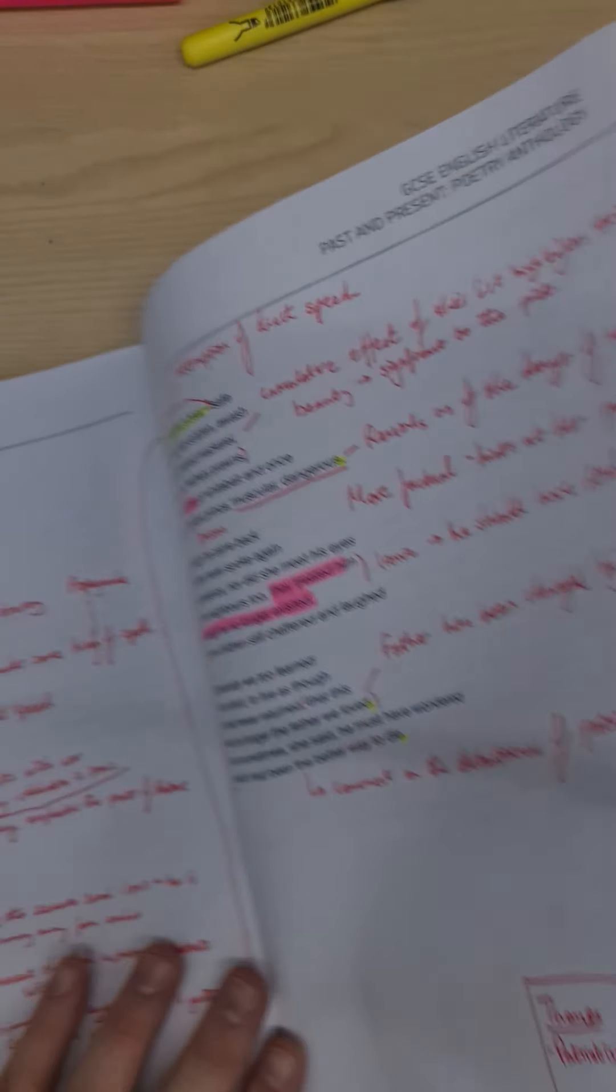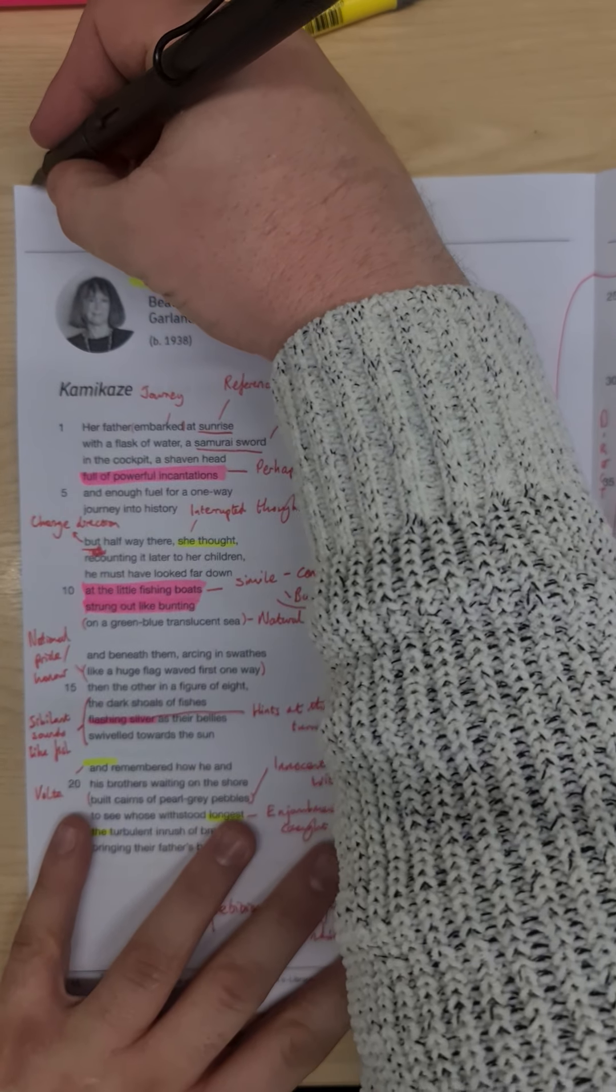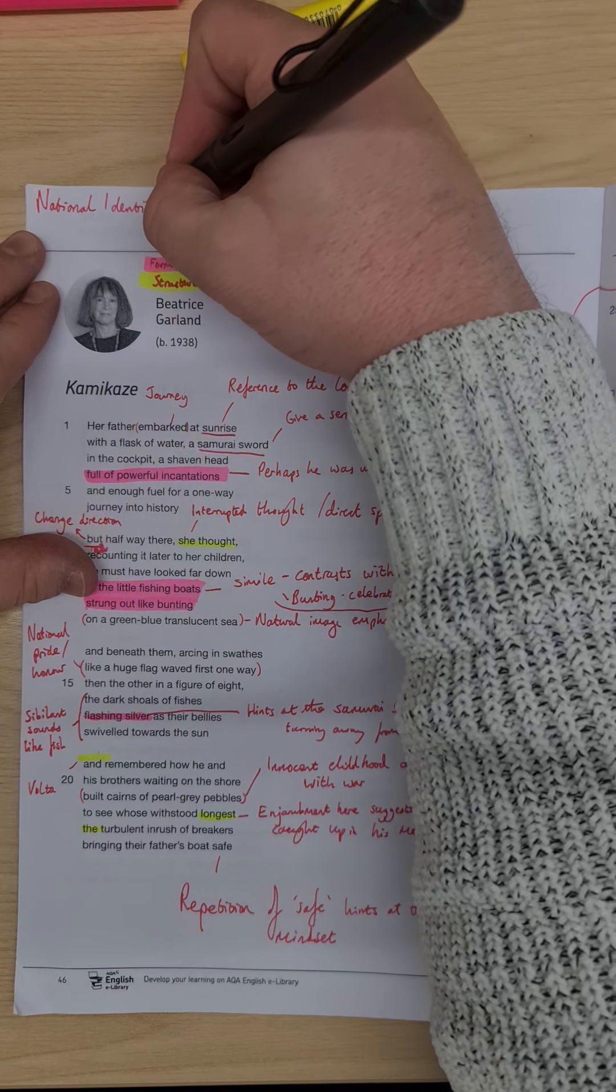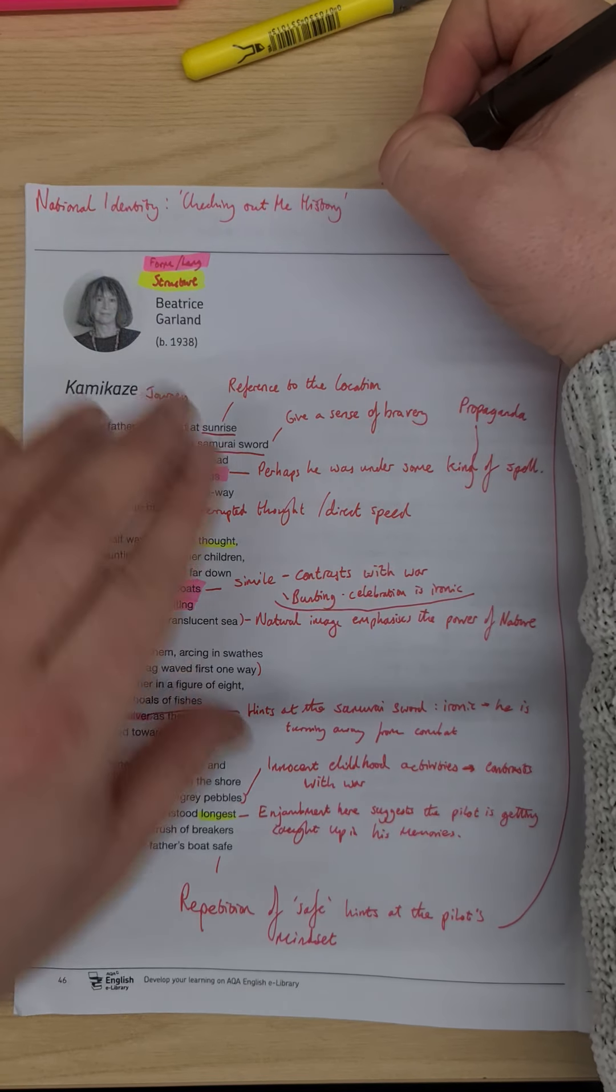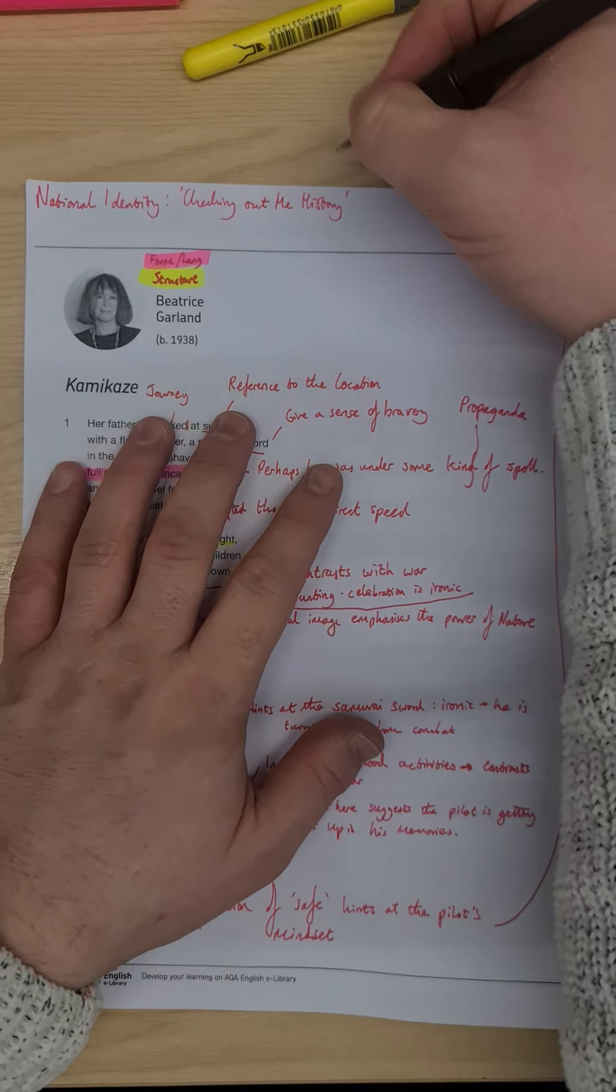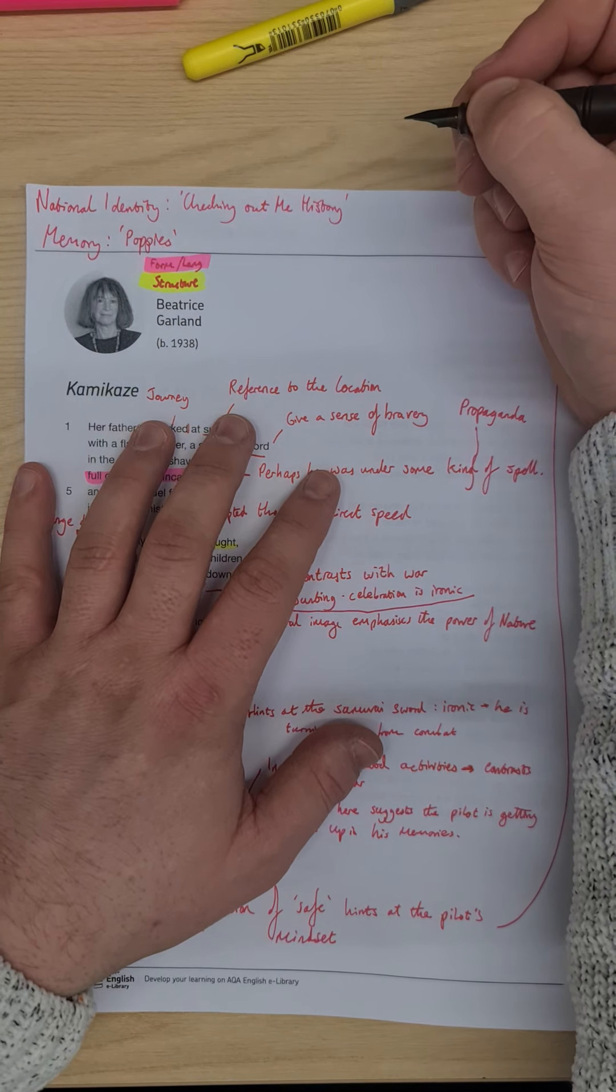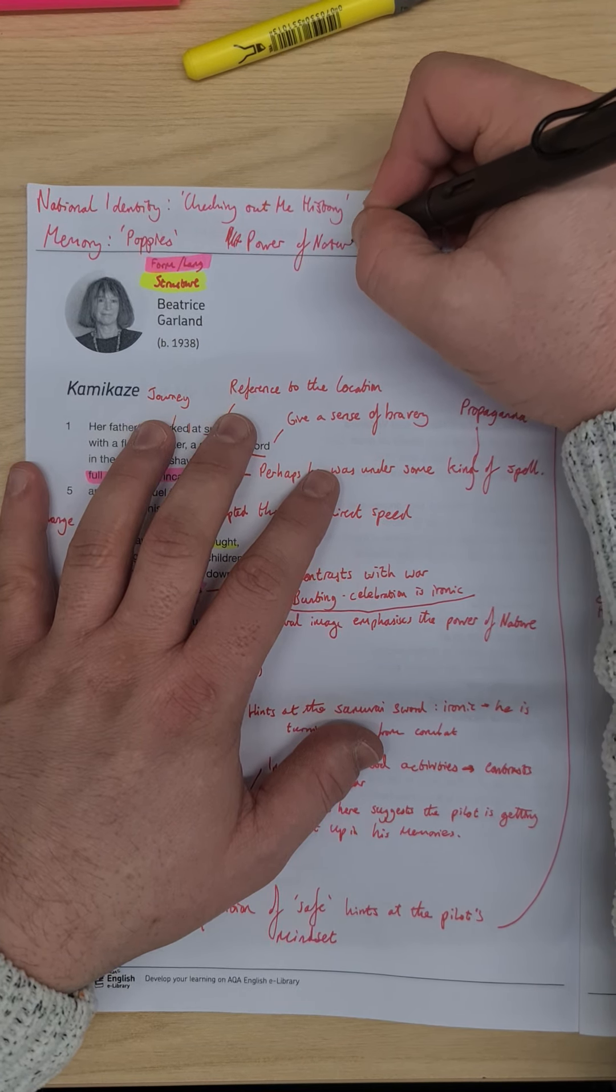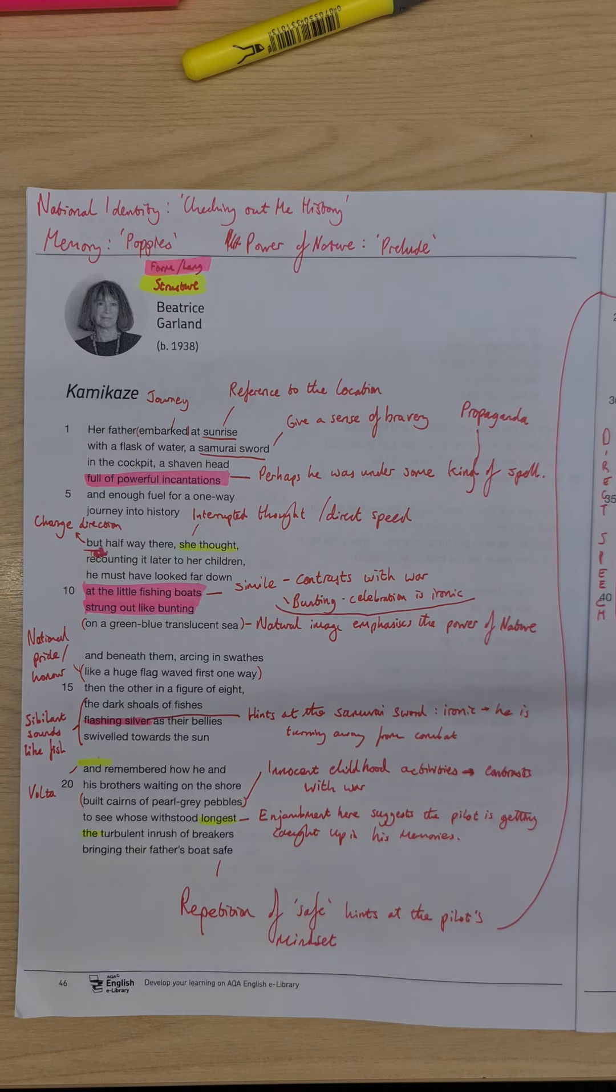So looking for the comparative notes for this poem, lots of poems to talk about on this one. The main thing that stands out to me is the idea of national identity, and that would compare with Checking Out History. We also have the idea of Poppies if you want to compare the idea of memory. You could write about The Prelude if you wanted to talk about the power of nature. Lots to think about, lots to compare this poem with.